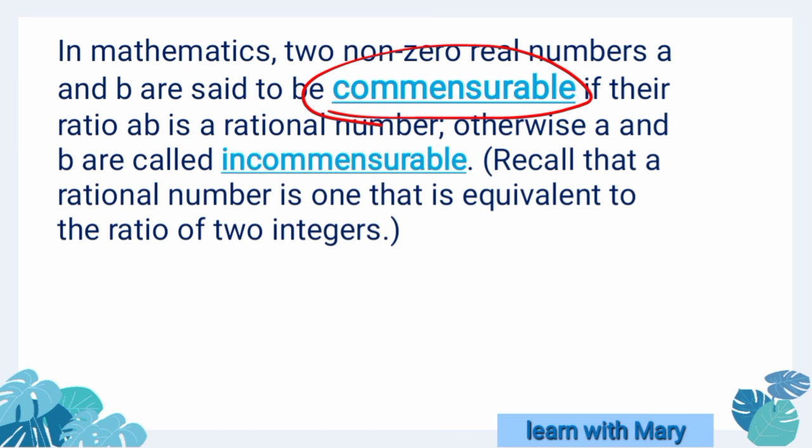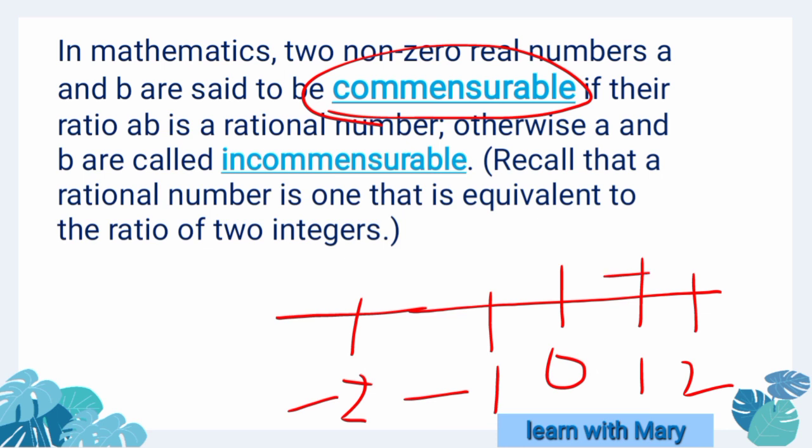Real numbers: I'll draw a real line with zero, positive numbers on the right side, all the negative numbers on the left side. All non-zero numbers means excluding zero - positive numbers and all negative numbers excluding zero.